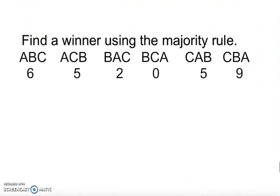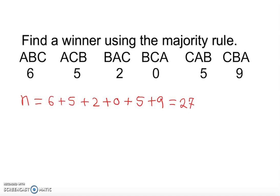Let's look at another example. Adam, Baker, and Cynthia: Adam got 6 votes, Cynthia and Baker got 5 votes, and so on. First we find the total: 6 + 5 + 2 + 0 + 5 + 9 = 27 total votes. Since 27 is odd, I add one to get 28, then divide by two to get 14. So we are looking for 14 votes to find a majority winner.